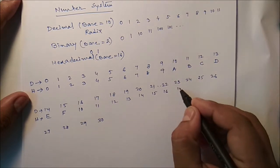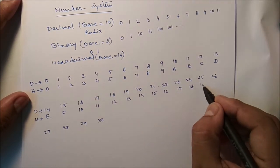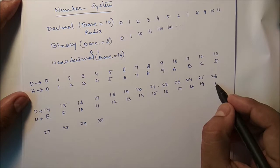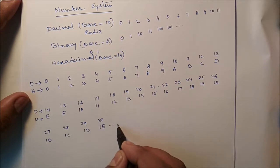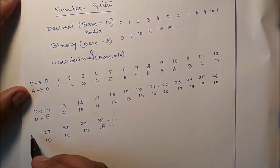15, 16, 17, 18, 19. Then it will be 1A. So this is the decimal part. This is the hexadecimal part.